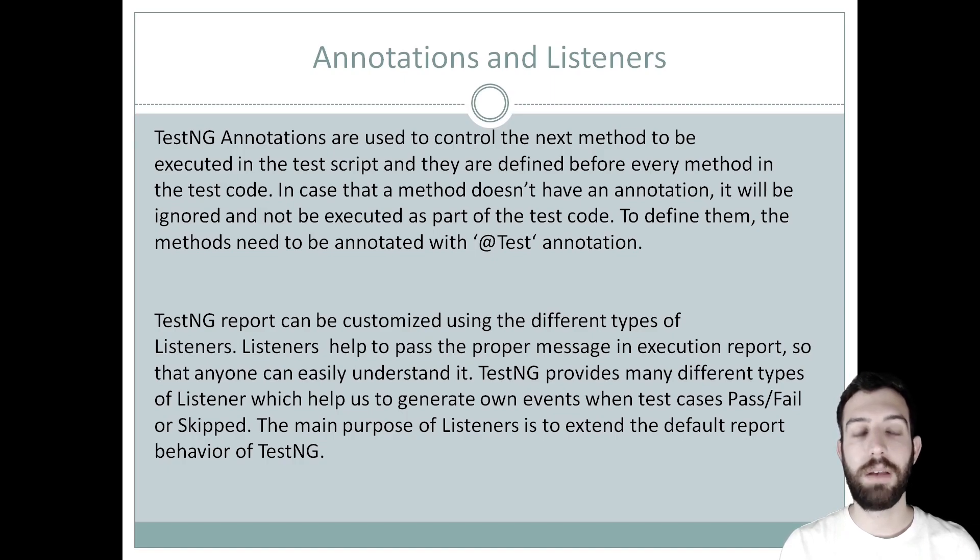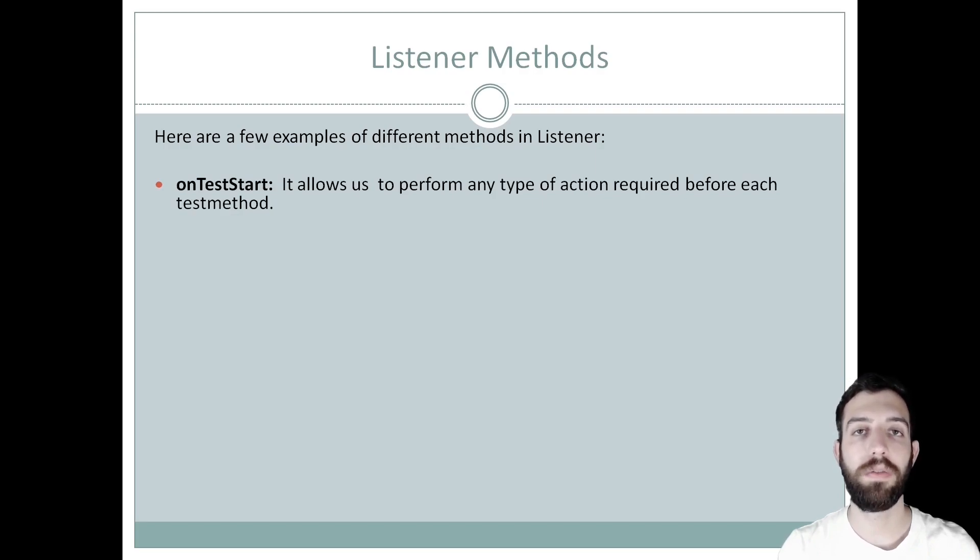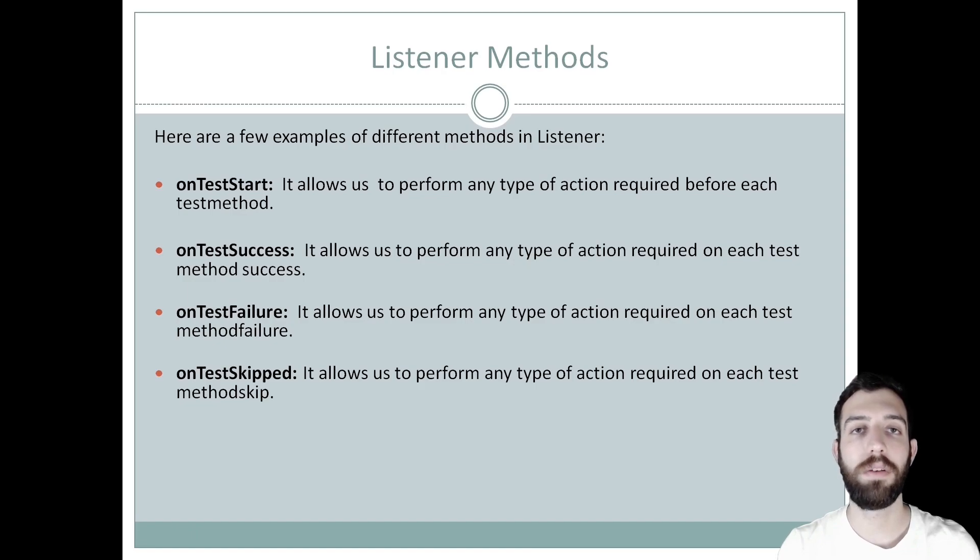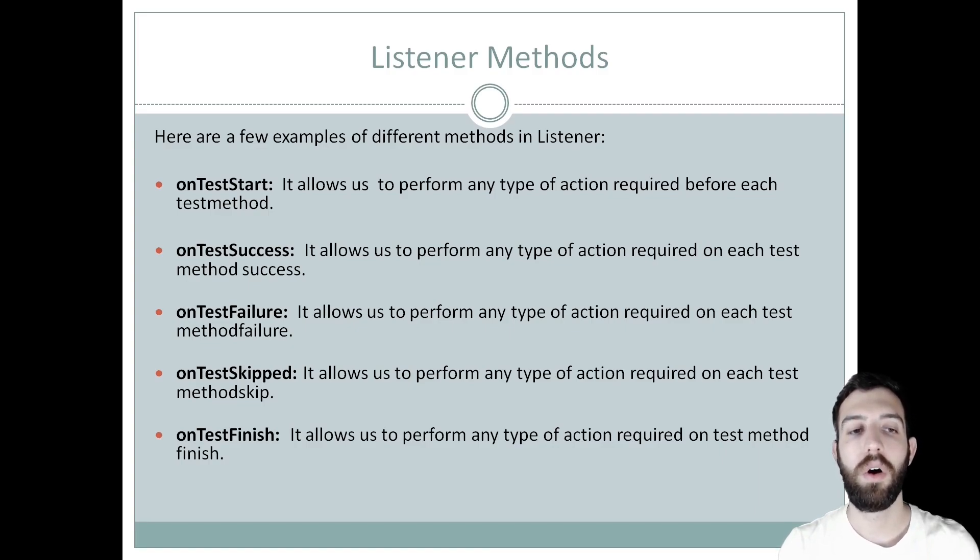TestNG report can be customized with the help of different types of listeners. Listeners help to pass the proper message in execution report so everyone can easily understand it. TestNG provides different types of listeners which help us to generate our own events when test cases pass, fail or skip. The main purpose of listeners is to extend the default behavior of the reports of TestNG. Here are some methods of listener: first is onTestStart which allows to perform any type of action required before each test method. Second is onTestSuccess which allows to perform any type of action required on each method success. Third is onTestFailure which allows to perform any type of action required on each test method failure. Also is onTestSkip which allows to perform any types of actions required on each test method skip. And last is OnTestFinish, which allows to perform any type of action required on test method finish.